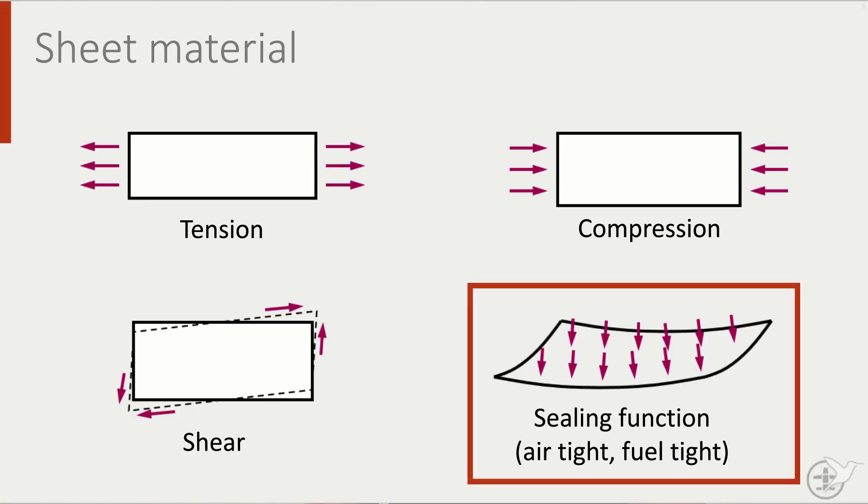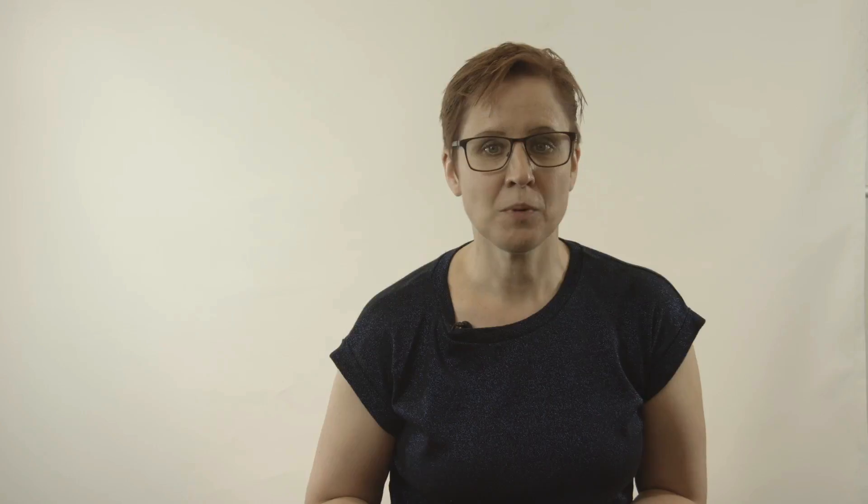Another advantage of sheet material is that it can also seal the structure from its surroundings. This is beneficial for use in integral fuel tanks and pressurization of the fuselage, both of which you would like to be liquid and airtight.